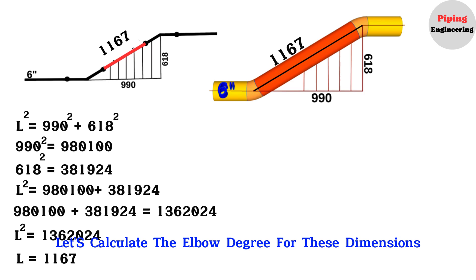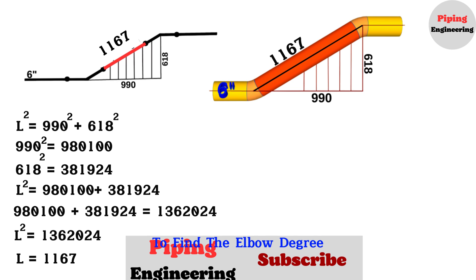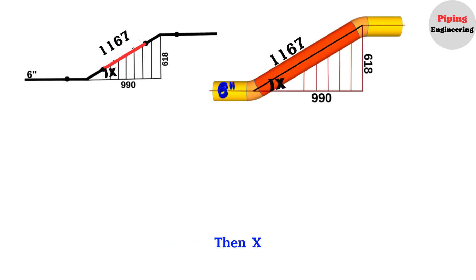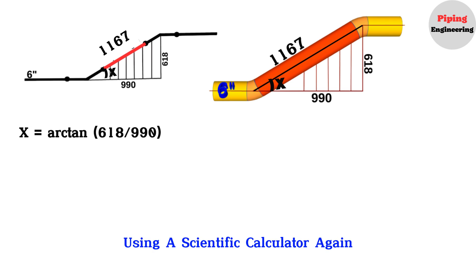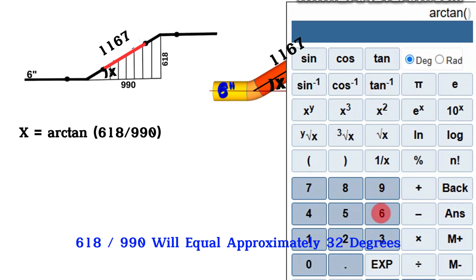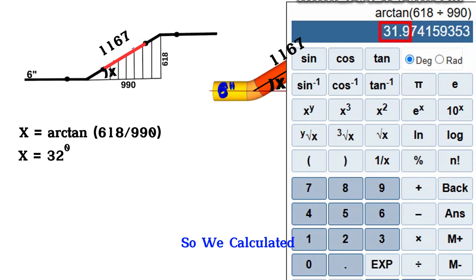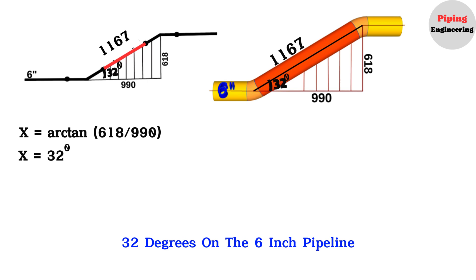Now let's calculate the elbow degree for these dimensions. To find the elbow degree, we will use a trigonometric function. If we denote this angle as x, then x degrees equals the arctangent of 618 divided by 990. Using a scientific calculator, the arctangent of 618 divided by 990 equals approximately 32 degrees. So the cutting angle of these elbows is 32 degrees on the 6-inch pipeline.